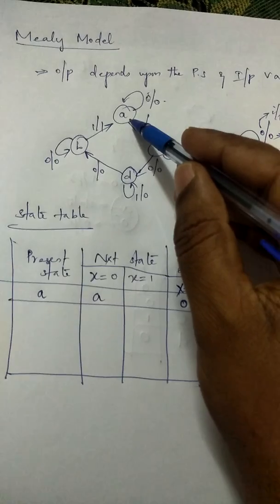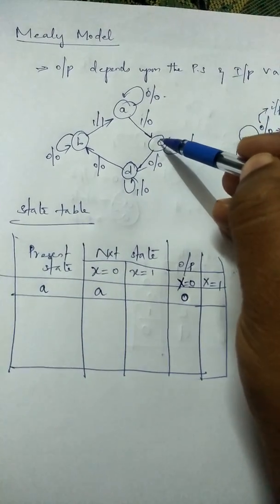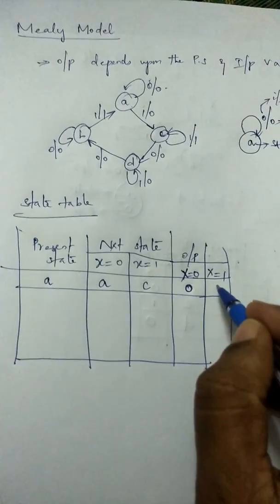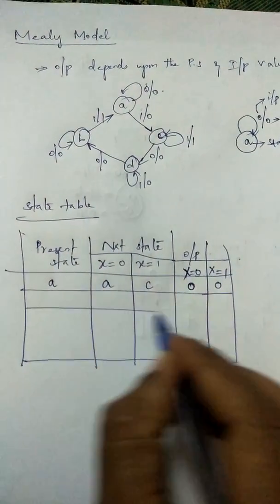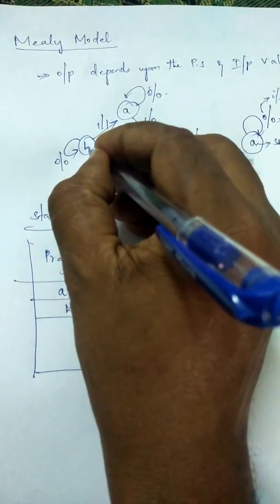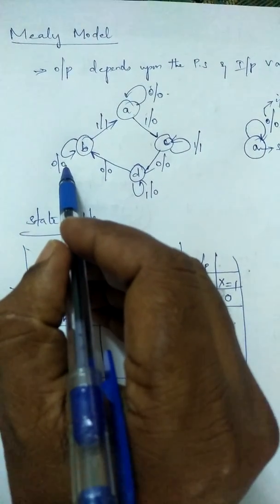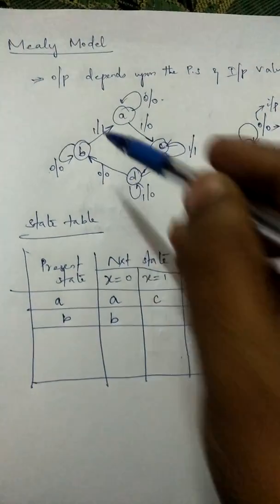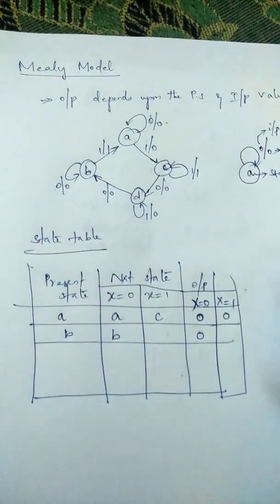For state A when the input is one, it goes to state C and the output is zero. Now for state B, when the input is zero, it goes to the same state B and the output is zero. For input value one, it goes to state A and the output is one.